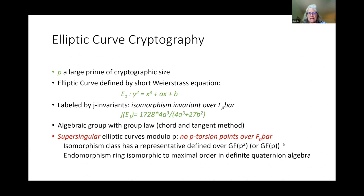Elliptic curves have a very nice compact label called the J invariant. The J invariant is simply a rational function in the coefficients defining the curve: 1728 times 4a³ in the numerator and 4a³ + 27b² in the denominator. This is actually an isomorphism invariant of elliptic curves over F_P bar. Two elliptic curves will have the same J invariant if they're isomorphic over F_P bar. It can be the case that two curves defined over F_P are not isomorphic over F_P but could be isomorphic over F_P bar, because you're allowing isomorphisms defined over the larger field.